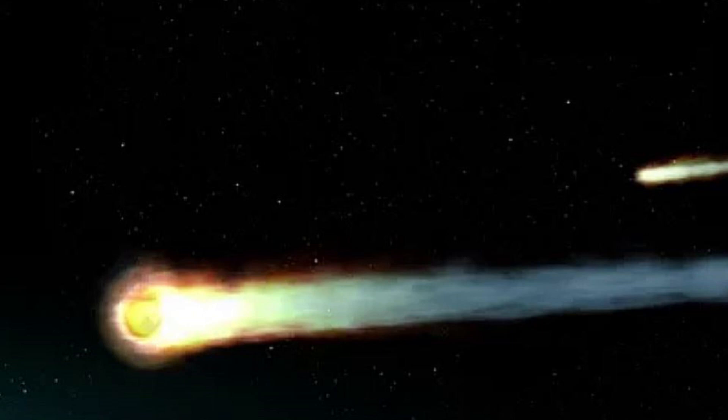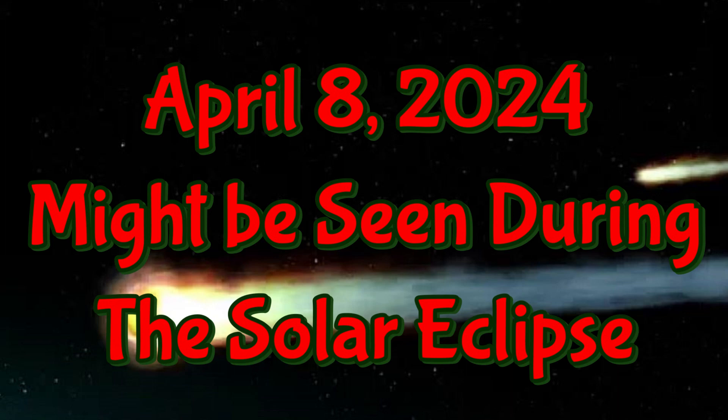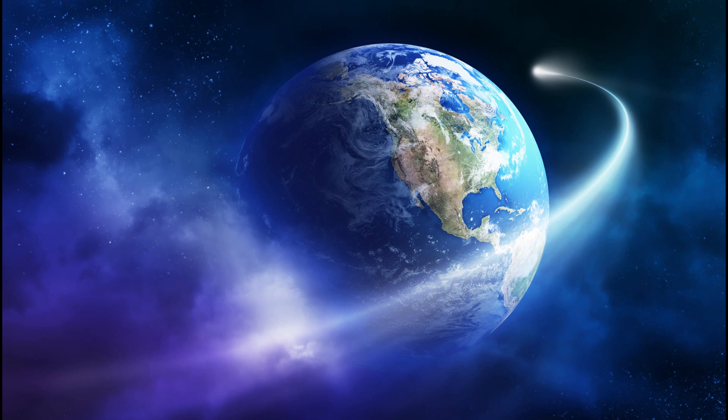The 12P Pons-Brooks is not usually visible, but could be as it does pass over the United States and Canada and Mexico during the solar eclipse of April 8, 2024. And then it will make its close approach to Earth 42 days later on June 2, 2024, and very possibly it could be a naked eye comet.